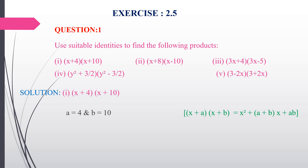In the given question, a = 4 and b = 10. Applying the identity: x² + (4 + 10)x + (4 × 10) = x² + 14x + 40. So the answer is x² + 14x + 40.